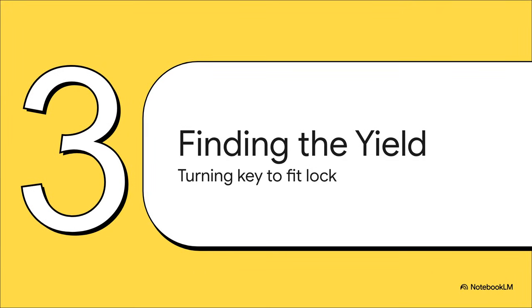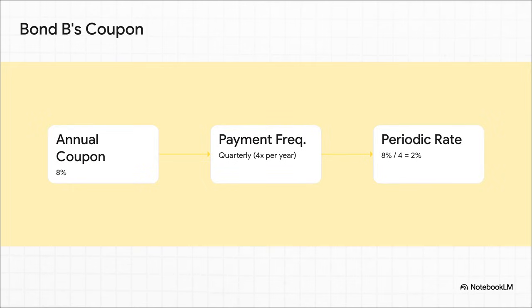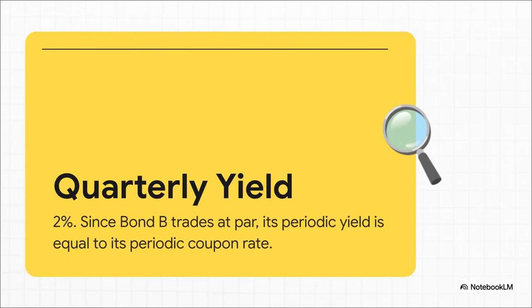We've got this 8% annual yield, but think of it like a blank key — Bond A and Bond B have different payment schedules, different locks. So we have to cut this key to the right shape before it'll work. Bond B has an 8% annual coupon but pays out 4 times a year. Simple math: take that 8%, divide it by 4, and you get a periodic coupon rate of 2%. And because Bond B is trading at par, that 2% coupon is also the market yield for each period.